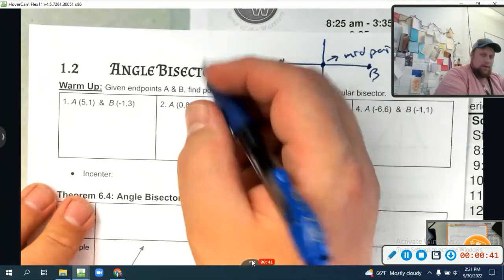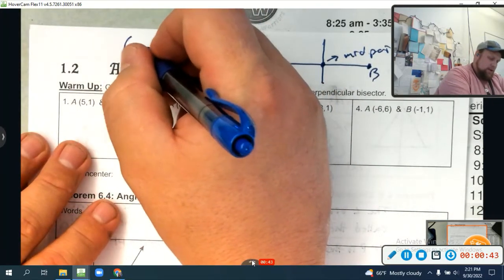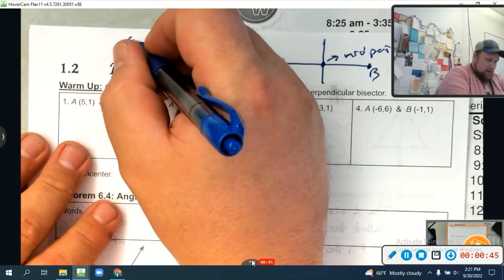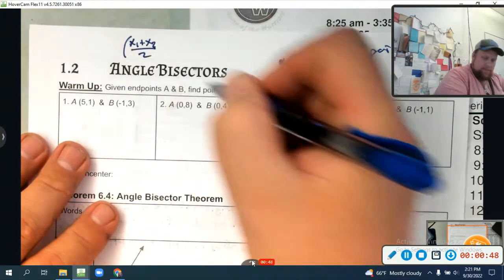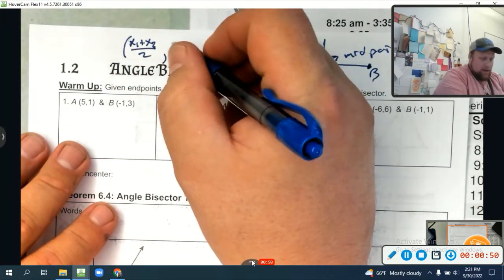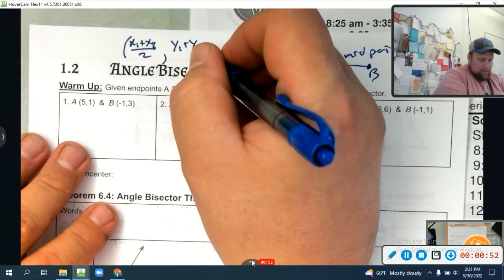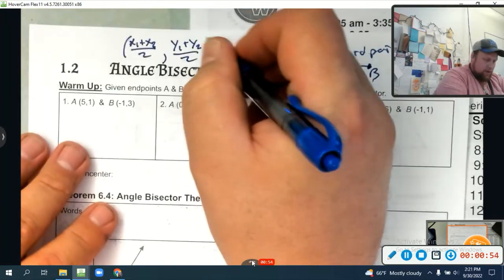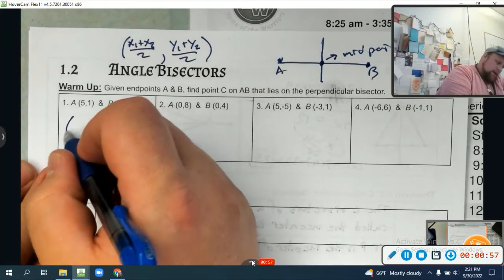We have a thing called the midpoint formula. To find the midpoint, you just take your two points, x1 plus x2, and divide them by two to average them, and that'll get your x value. Then take your two y points, add them and divide by two to average them, and you'll get your y point.